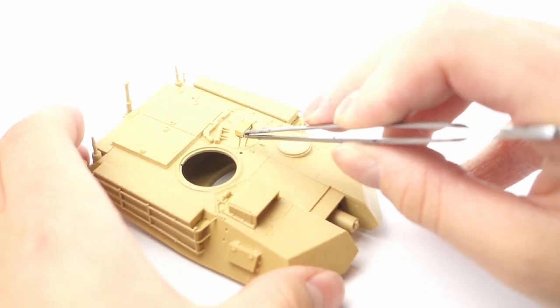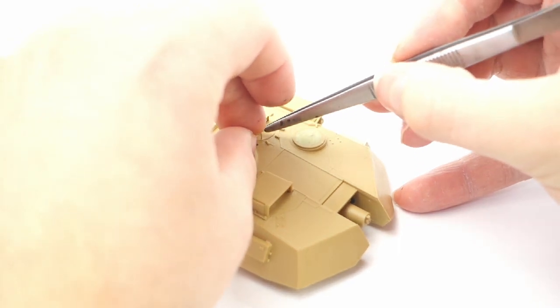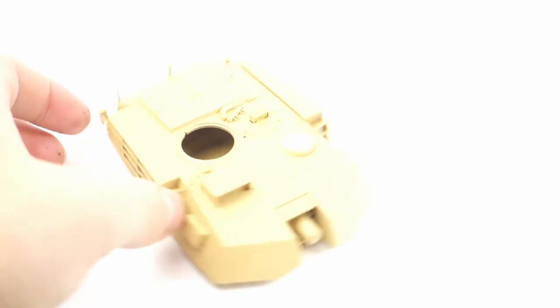The grab handle on the loader's hatch has been quickly replaced with one made from copper wire. It was included in the PE set, but making it this way makes it look more authentic.